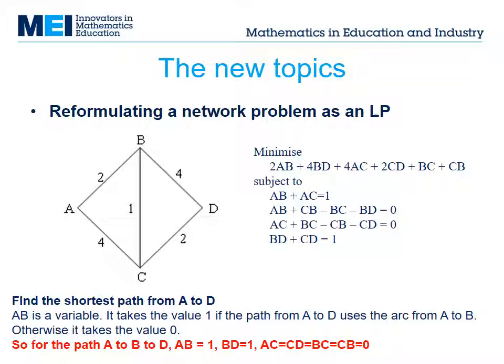The first condition says that the path must include just one of AB or AC. The last condition says that the path must include just one of BD or CD. Both work for our example.